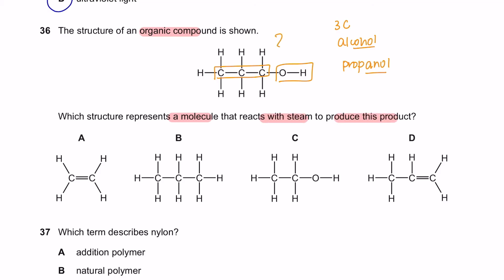Which structure represents a molecule that reacts with steam to produce this product? So we are looking to find which element that has reacted with steam, which is water, to produce propanol. This process is called hydration. And in hydration, only alkene will react with water to produce an alcohol.